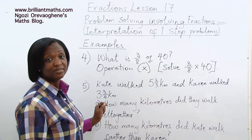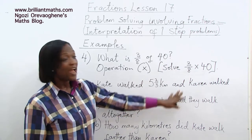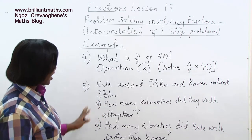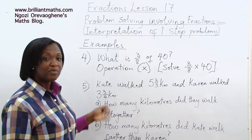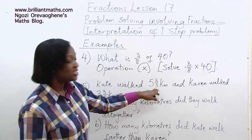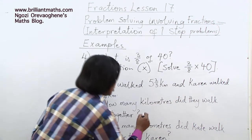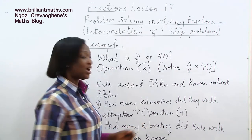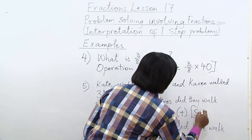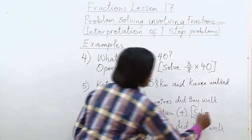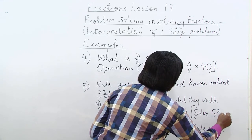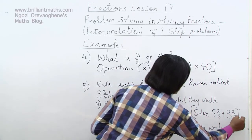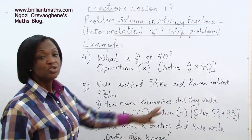Question five: Kate walked five and two-thirds kilometers and Karen walked three and three-quarter kilometers. Part A — how many kilometers did they walk altogether? We need to add the distances walked by Kate and Karen, so the operation is addition. Pause the video and solve five two-thirds plus three three-quarters. We have learned how to add mixed numbers, so work that out.